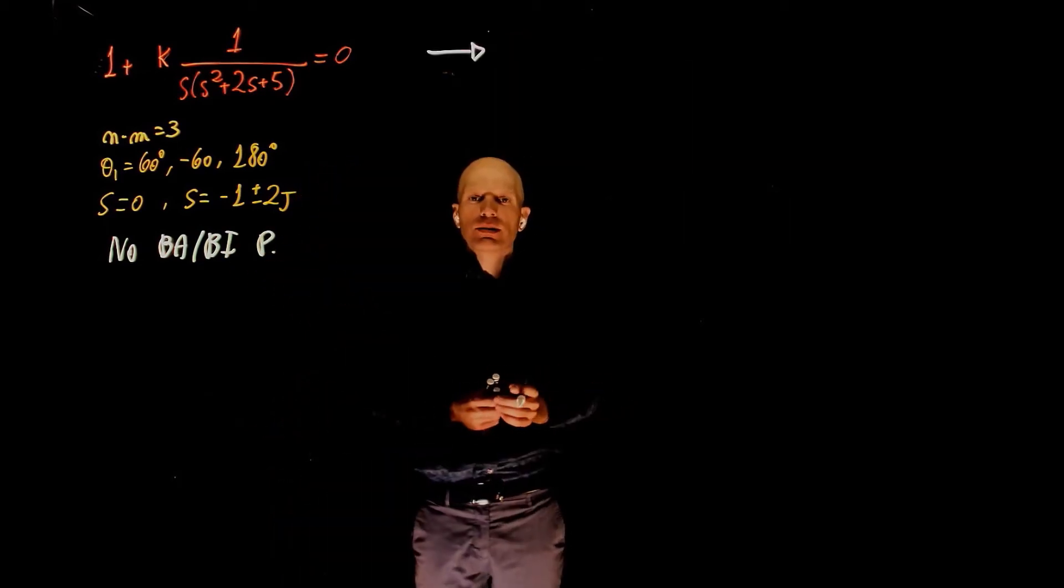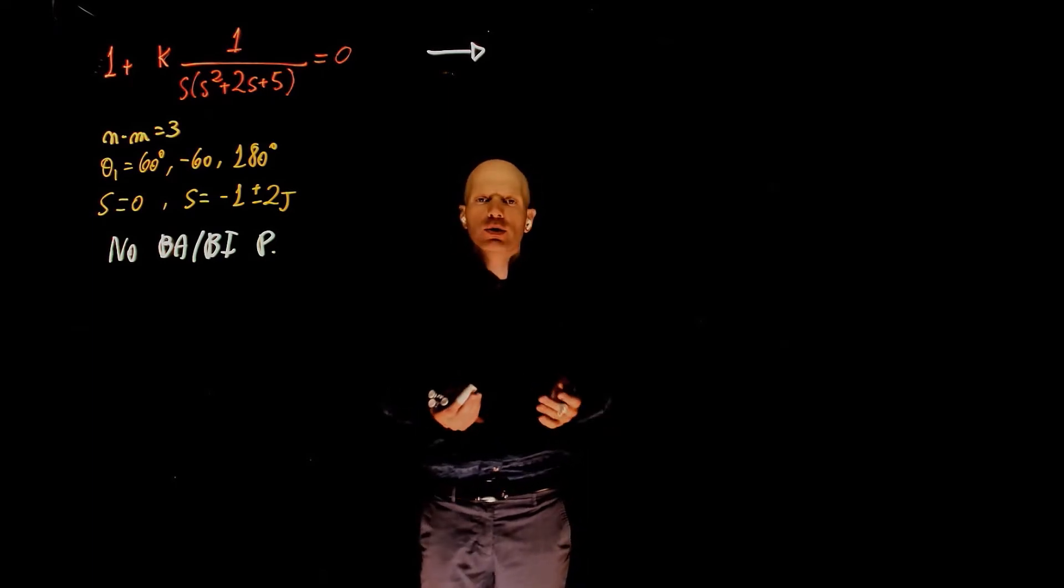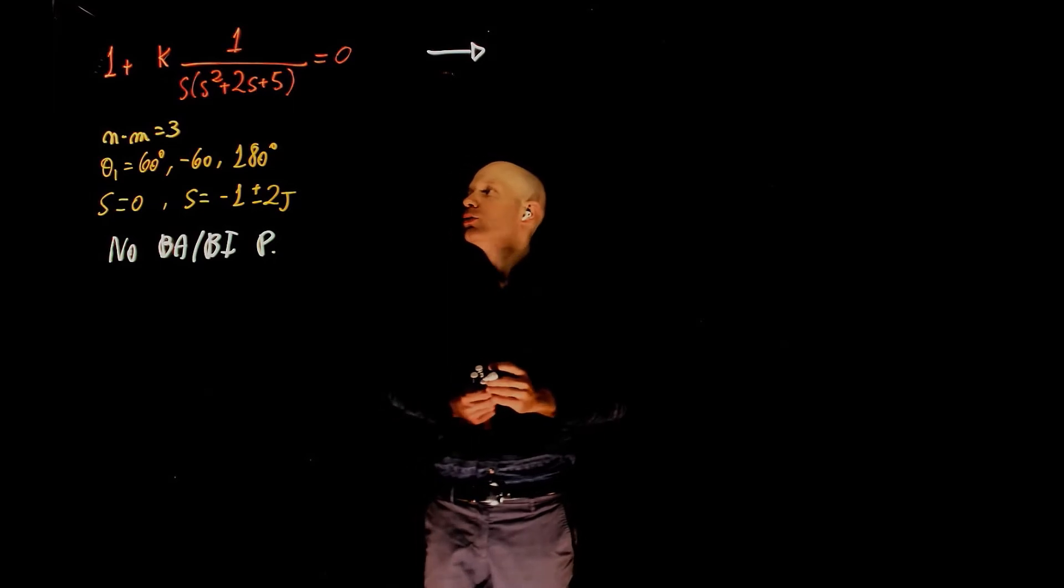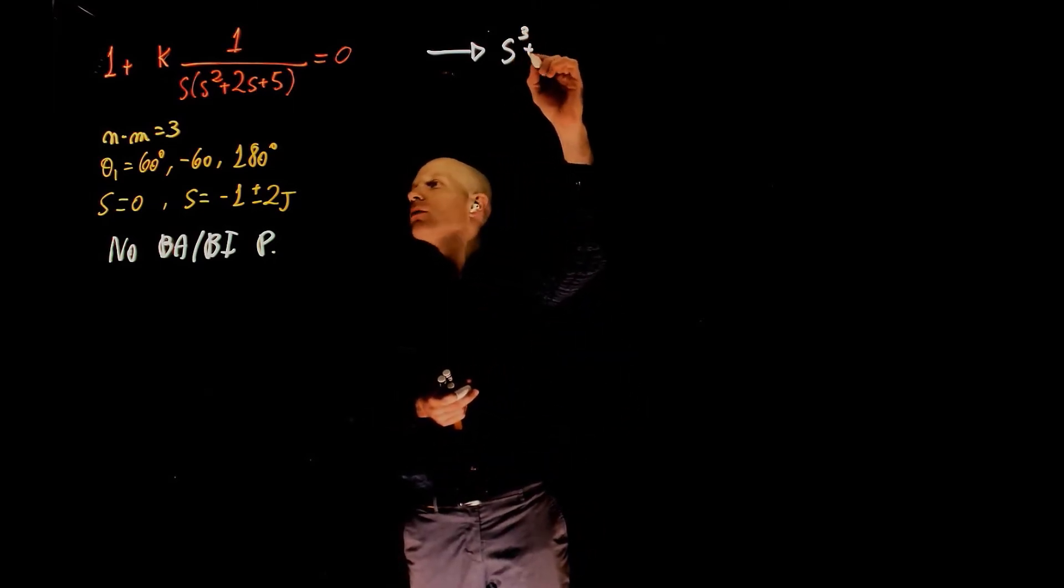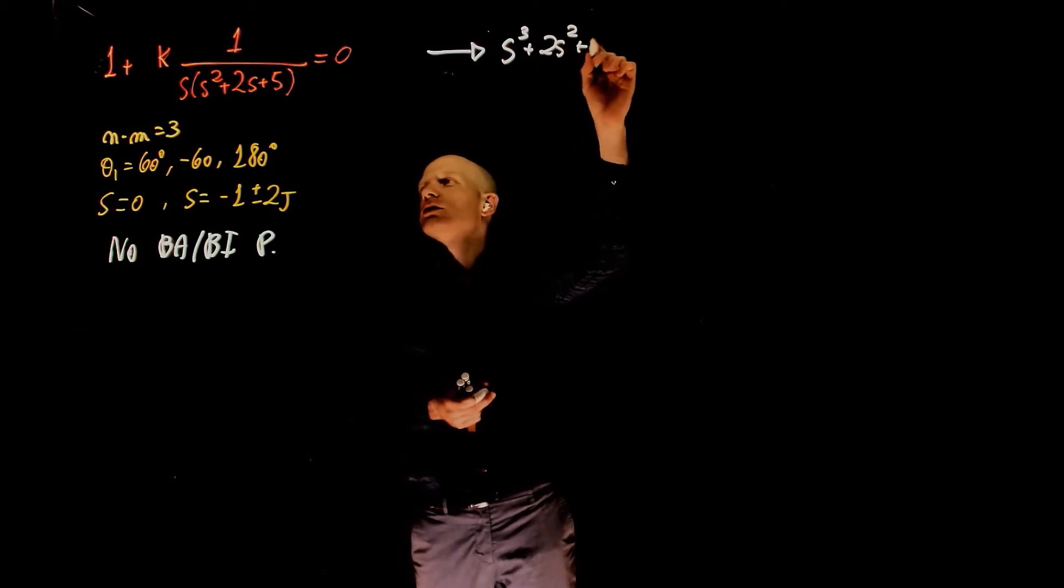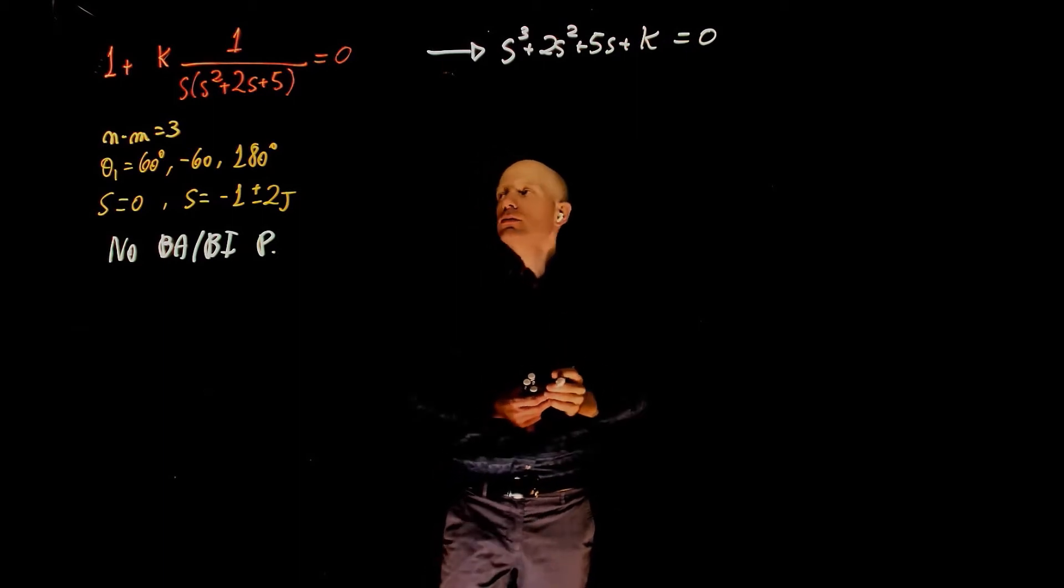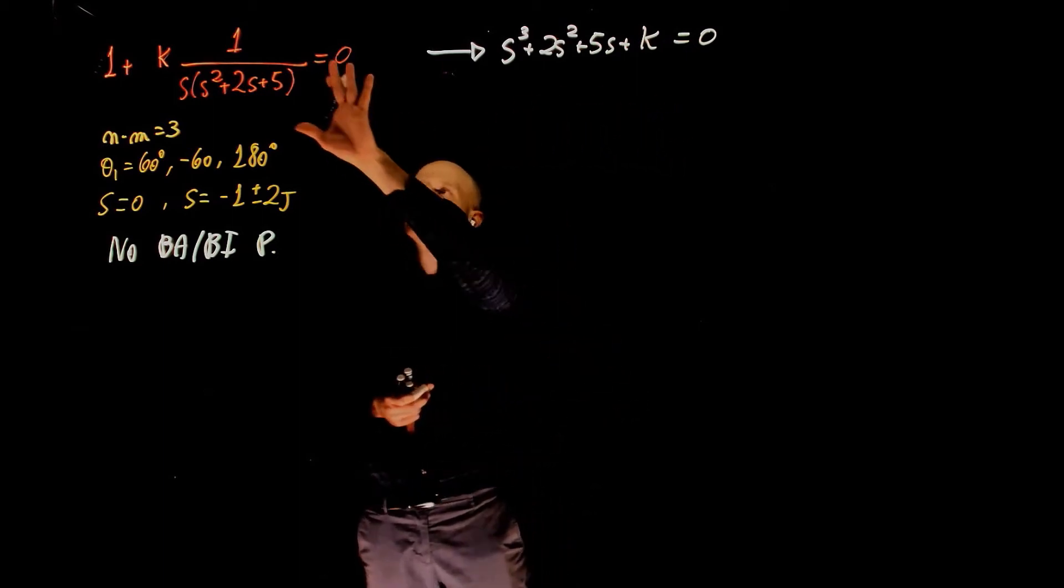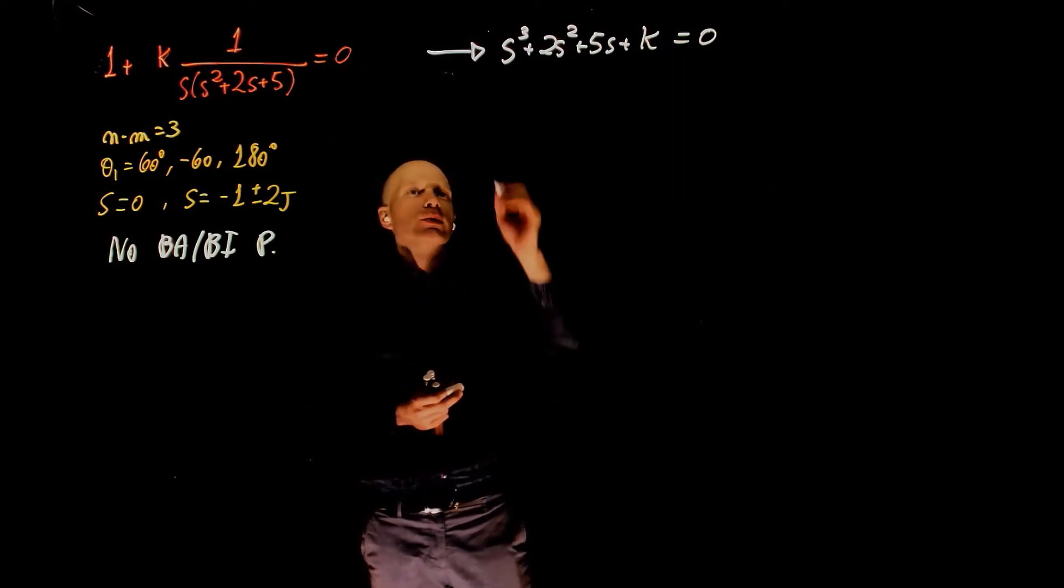Now, let's look for the maximum value of k before the system becomes unstable. To do that, we can use the Routh-Hurwitz stability criterion. Finding a common denominator and rearranging this expression will give s to the power of 3 plus 2s squared plus 5s plus k equals 0. This is the characteristic equation in another form.